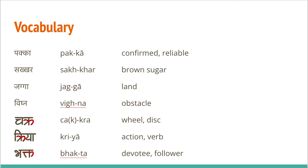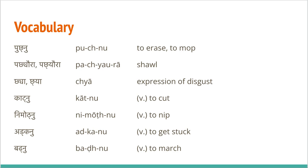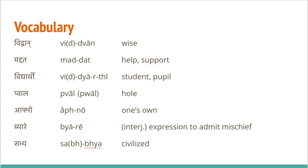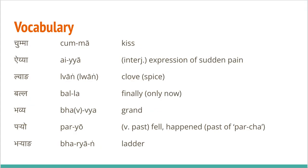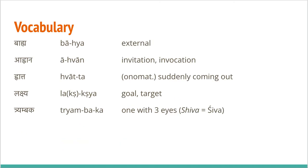Words using half letters from ksha and tra: laksha — you've seen this before — and trimbaka. As in the previous videos, there are some slides here for you to learn the vocabulary and meaning of the words covered in the lesson. Pause here for a few seconds and review them on your own by stopping the video. That is all for today's lesson — see you next time.